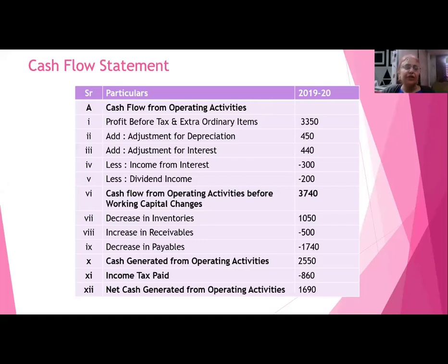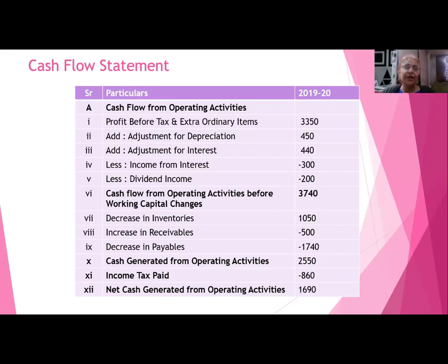Here is the format for cash flow — this is the routine business format. First, we take cash flow from operating activities. The crux of our profit and loss account is our profit before tax and extraordinary items. While studying the P&L, we had calculated profit before tax — this is a very crucial item. We take that figure directly here. Then there is depreciation — it is our charge towards the wear and tear of our fixed assets.